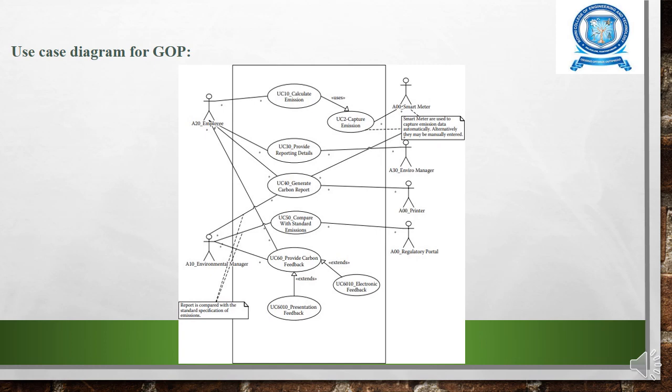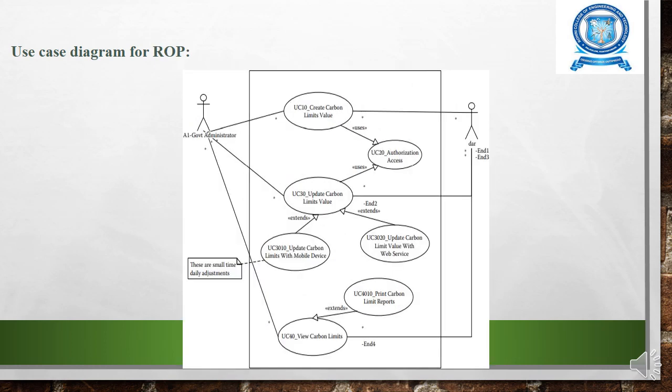The use case diagram of the green organization portal includes calculating and capturing emissions, providing reporting details, generating carbon reports, comparing with standard emissions, providing carbon feedback, electronic and presentation feedback. The environmental manager reviews existing data and determines the carbon footprint of the particular organization.